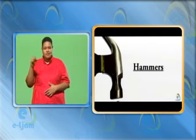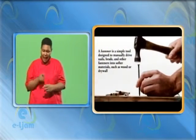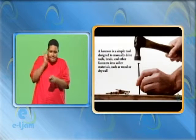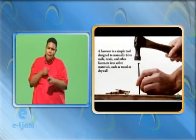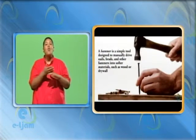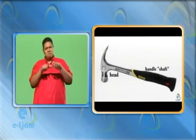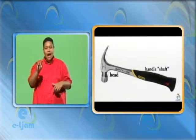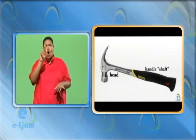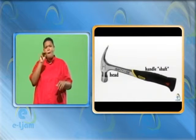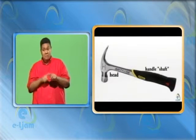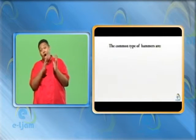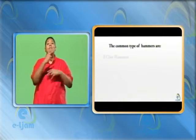Now let us look at hammers. A hammer is a simple tool designed to manually drive nails, brads and other fasteners into softer materials such as wood or drywall. A hammer has a head and a handle or shaft. Hammer sizes are defined by the weight of the head, measured in ounces and pounds, even in these days of metrication. Depending on the type of hammer, the weight of the head usually ranges from 4 ounces to 20 pounds.